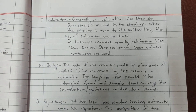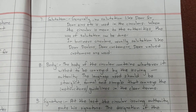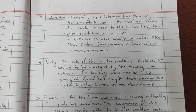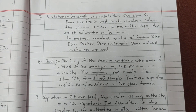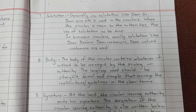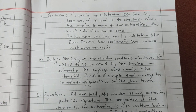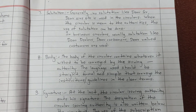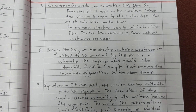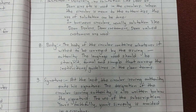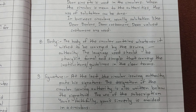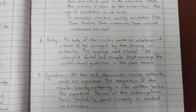Salutation: Generally, no salutation like 'Dear Sir,' 'Dear Sirs,' or 'Dear Madam' etc. is used in circulars. When the circular is meant for the authorities, the use of salutation can be done. In business circulars, usually salutations like 'Dear Dealers,' 'Dear Customers,' 'Dear Valued Customers' are used. Body: The body of the circular contains whatever it wishes to be conveyed by the issuing authority. The language used should be straight, formal and simple, conveying the instructions and guidelines in clear terms.